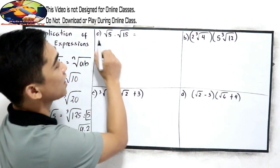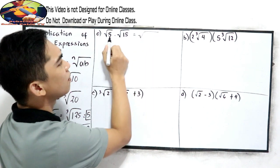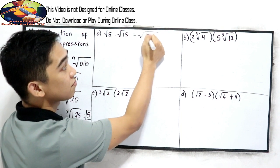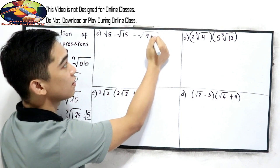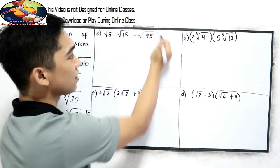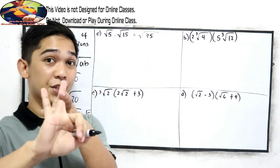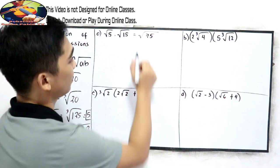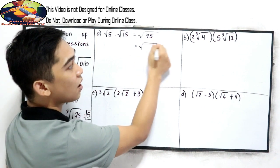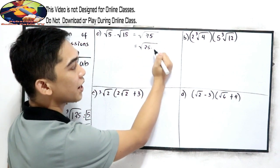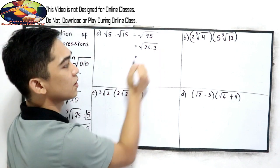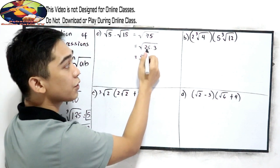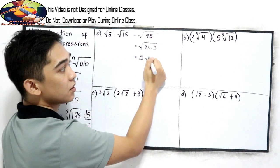In letter A, just multiply 5 times 15, that is 75. Factors of 75 are 25 times 3. Now 25 is a perfect square number. So our final answer is square root of 25, which is 5, times square root of 3 — so 5 square root of 3.